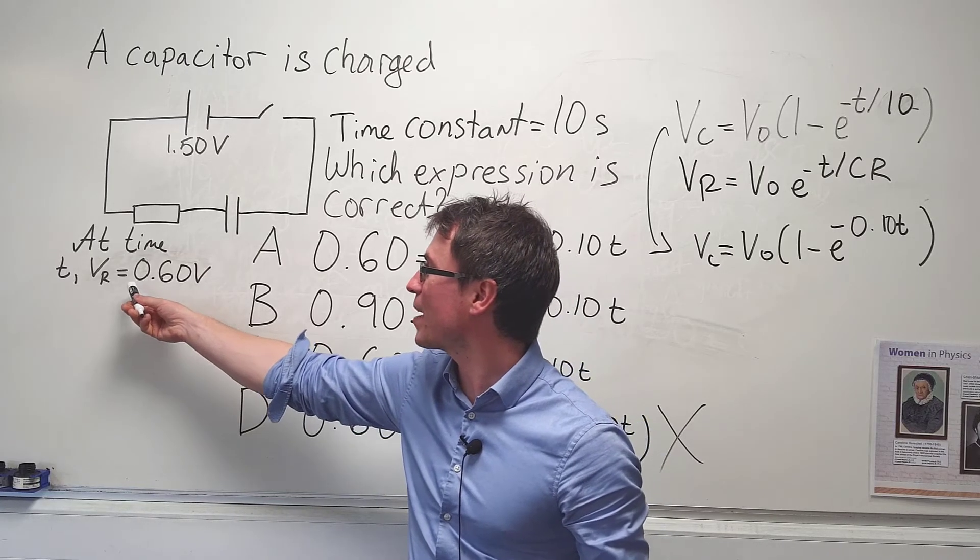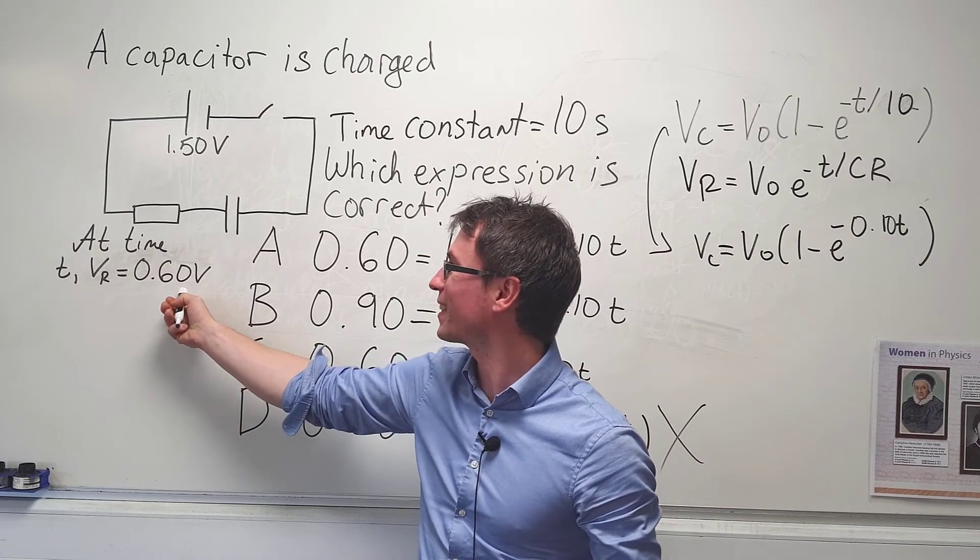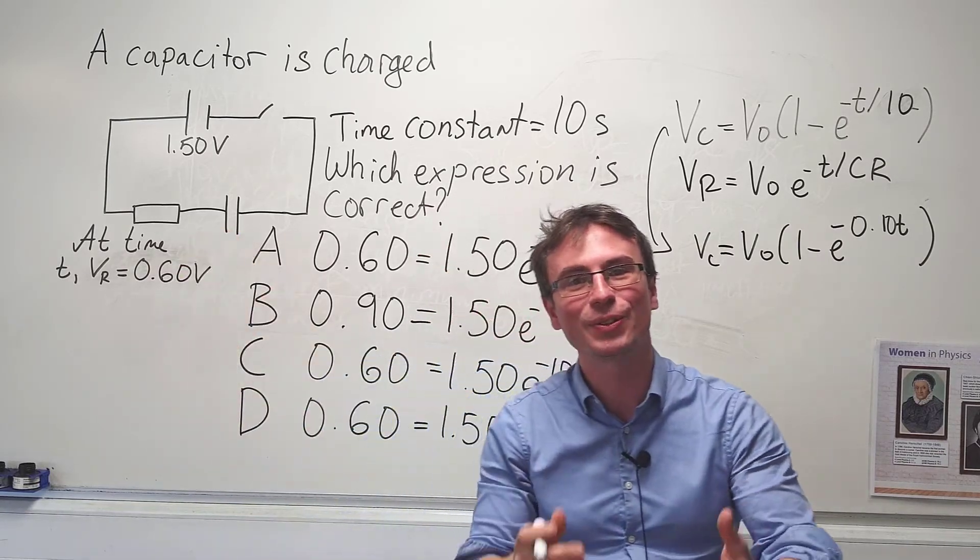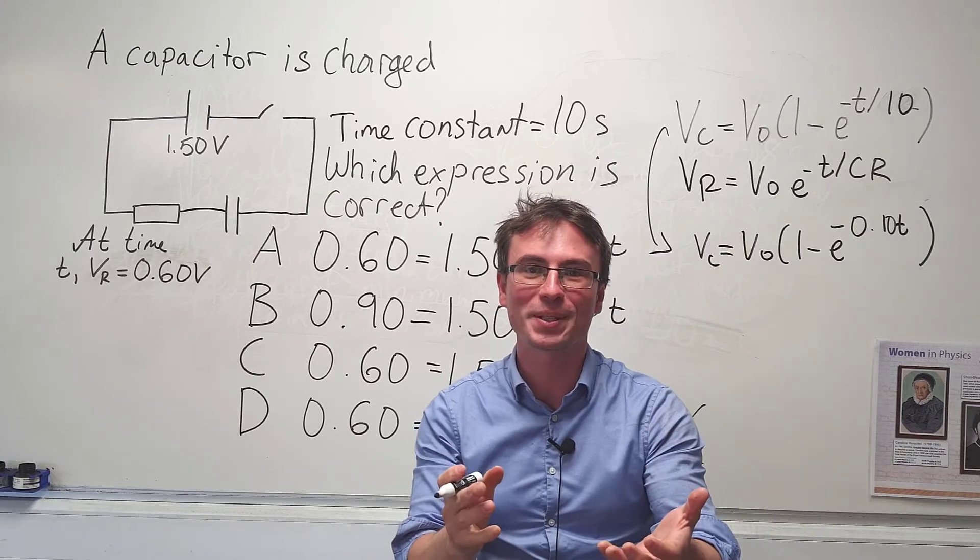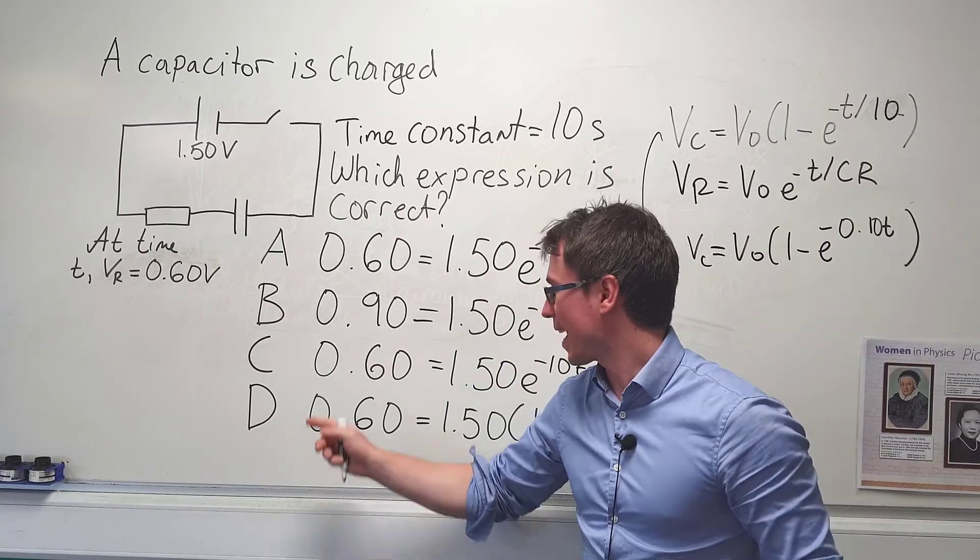Additionally, if the potential difference across the resistor is 0.6, this means that the potential difference across the capacitor will be equal to 0.9 volts. Let's have a look at C next.